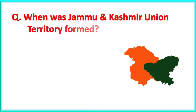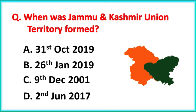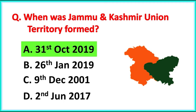When was Jammu and Kashmir Union Territory formed? The correct answer is option A: on 31st October in the year 2019.